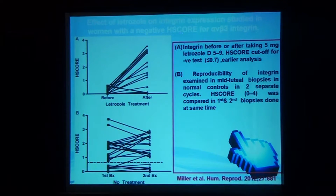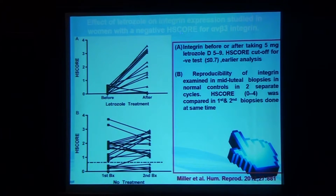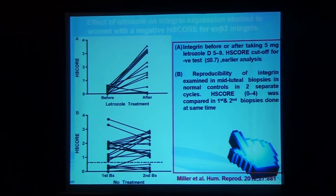But very importantly, maybe the rise of alpha-V beta-3 was just due to cycle-to-cycle variation. Therefore, Miller and colleagues studied how alpha-V beta-3 expression varies from cycle to cycle. They took biopsies in follicular and luteal phases, repeated biopsies within six months, and observed no cycle-to-cycle variation in alpha-V beta-3 — it was almost the same expression within six months. So when a drug is given and the alpha-V beta-3 integrin was previously absent but then becomes present, this is most probably due to the aromatase inhibitor.